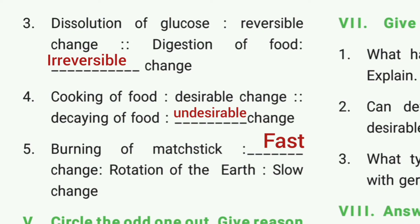Third one: dissolution of glucose is a reversible change; digestion of food is an irreversible change. Fourth one: cooking of food is a desirable change; decaying of food is an undesirable change. Fifth one: burning of a matchstick is a fast change; rotation of the earth is a slow change.